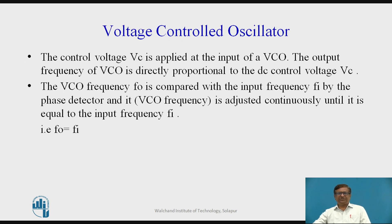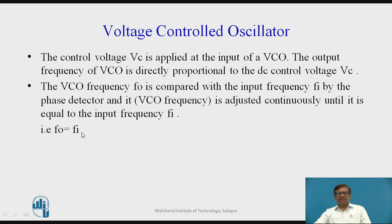The last block is the voltage controlled oscillator, whose output frequency depends upon the input voltage VC. The control voltage VC is applied at the input of the VCO, and the output frequency of the VCO is directly proportional to the DC voltage VC. The VCO frequency F0 is compared with the input frequency FI by the phase detector and is adjusted continuously until it equals FI. In short, the PLL tries to produce F0 in such a way that it is always equal to the input frequency FI.